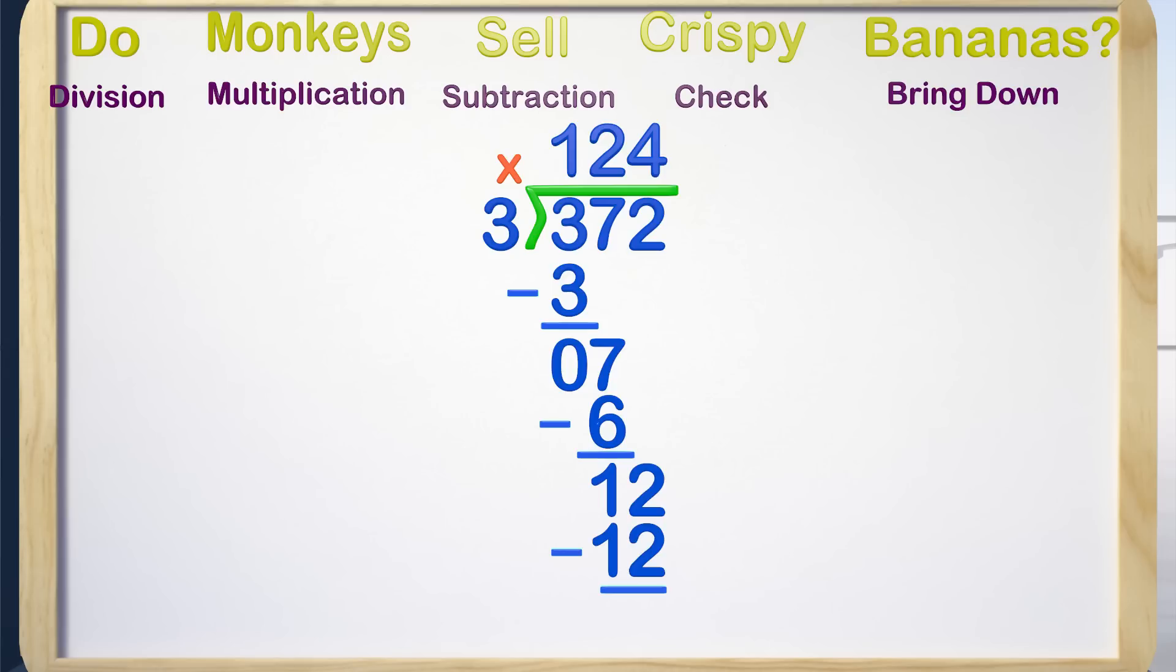12 subtract 12 is 0. We now check and see if 3 goes into 0, which it does not. The last step is to bring down, and if we look above, there is nothing left to bring down, so we are now done with the problem.